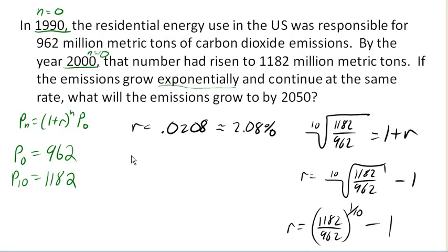So making our prediction now, we're trying to predict the emissions in 2050. 2050 would be, okay let's see, 1990 was n equals 0, 2000 was 10 years later. This is 50 years after that, so this would be n equals 60. So making our prediction for 60 years later, we've got 1 plus r. So we just calculated our value for r to the power of 60 times P0, which is 962.